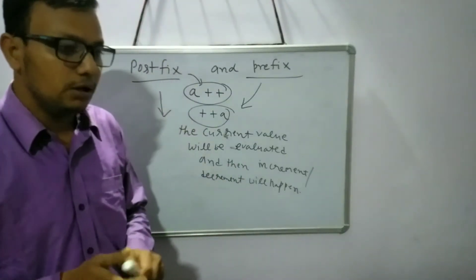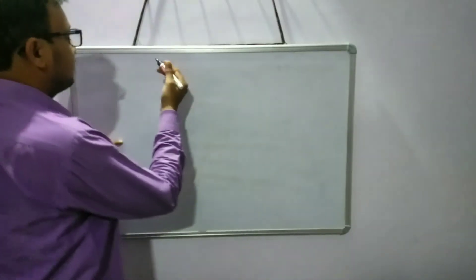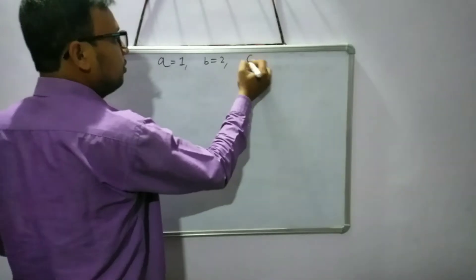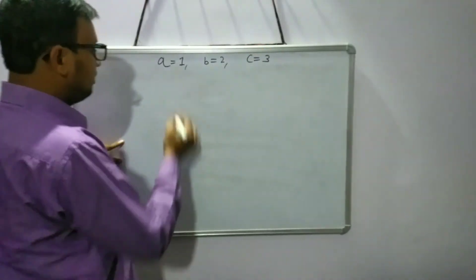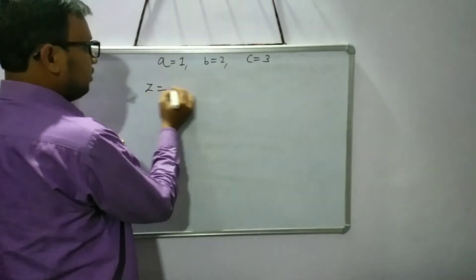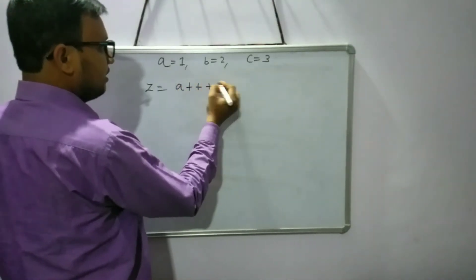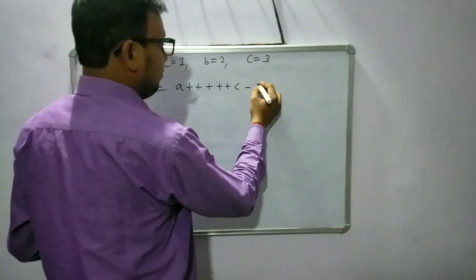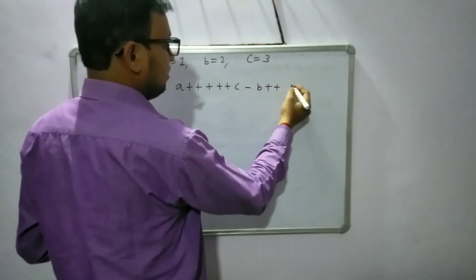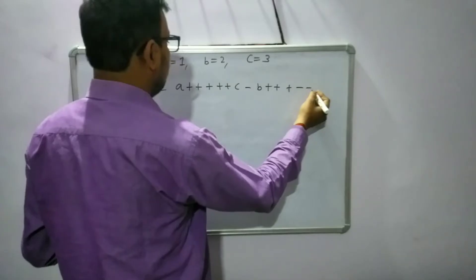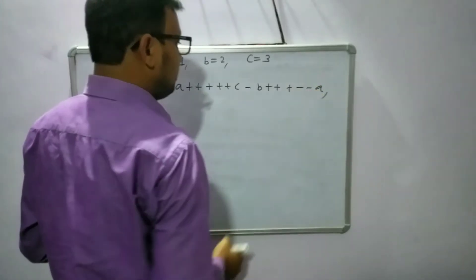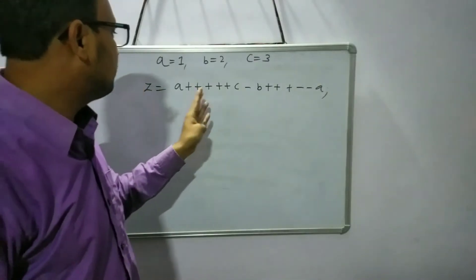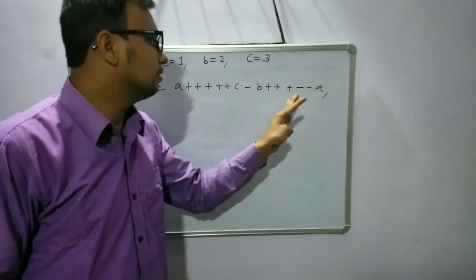We will understand this through an example. Let us take: a = 1, b = 2, and c = 3. And here z = a++ + ++c - b++ + ++  - --a. This is the statement I have written. If you see, there are a lot of plus signs and minus signs, so we need to be careful differentiating the increment operators from the normal arithmetic operators.